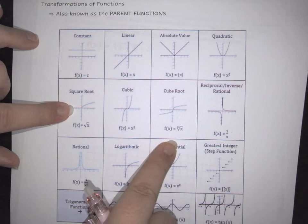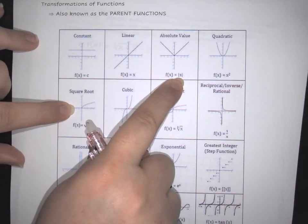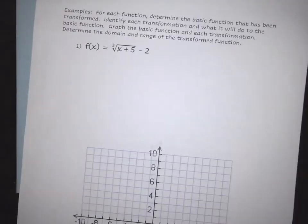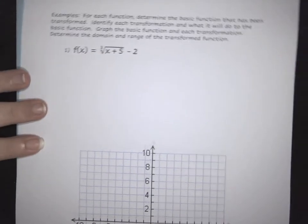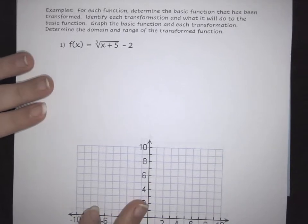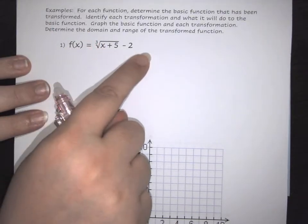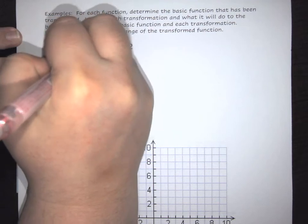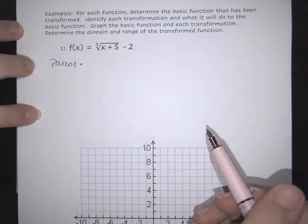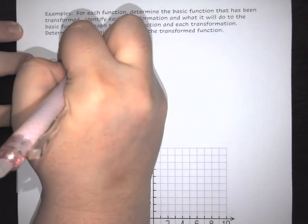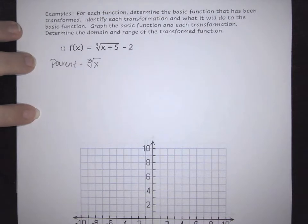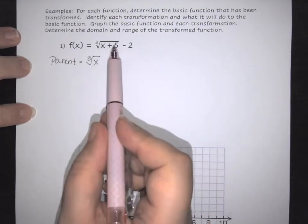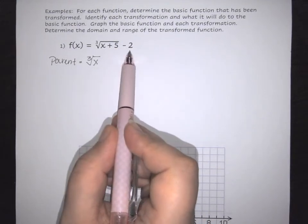When you're identifying a parent function, you would identify it as, say, absolute value of x, or quadratic, so x squared. The translation comes from everything else that surrounds your function. For example, we have the cubed root of x plus five minus two. To identify the parent or base function, I look at the most basic concept — in this case it would simply be the cubed root of x, and everything else is added on.